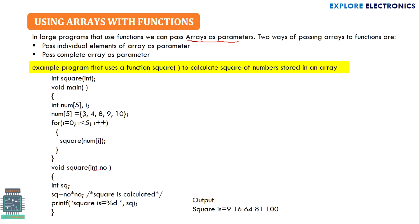One way is passing the array elements one by one — we pass the array values one after the other in iterations. Another way is to send the entire array to the function. Here is an example showing how we send each element of the array to the function. This function is for calculating the square of each array element.